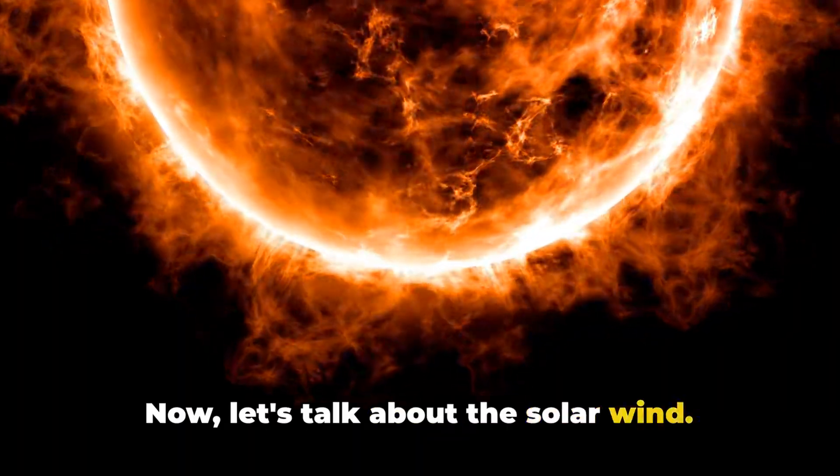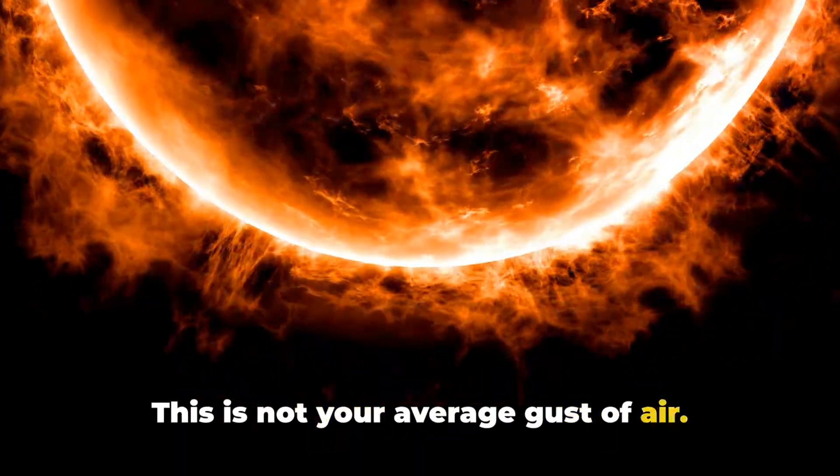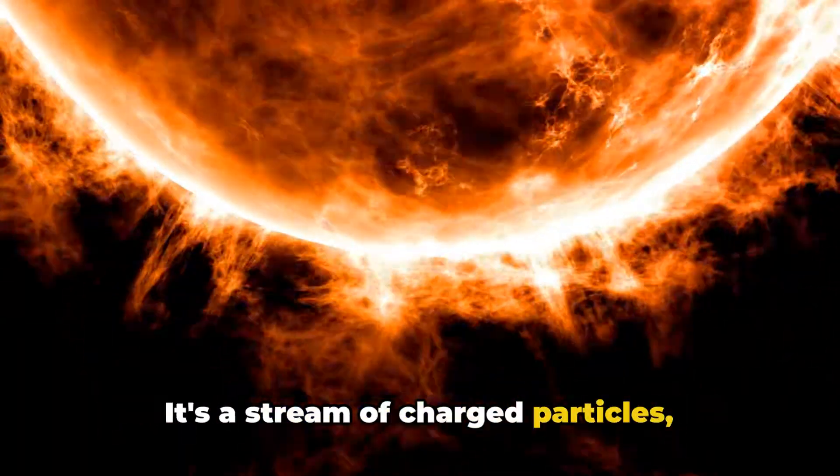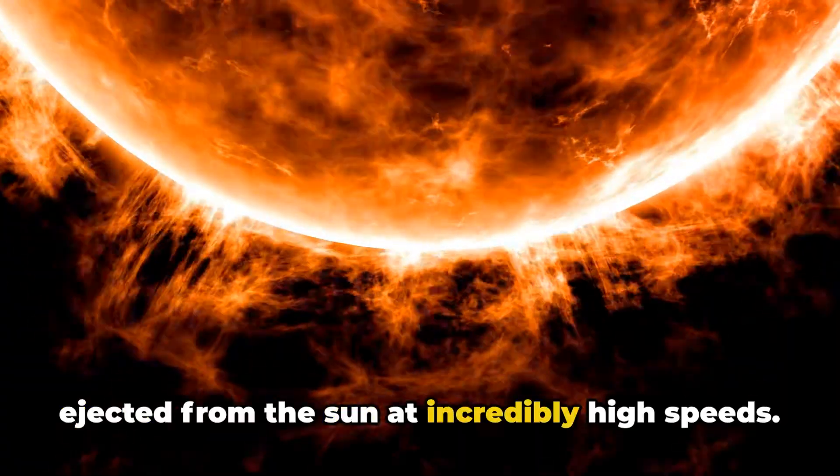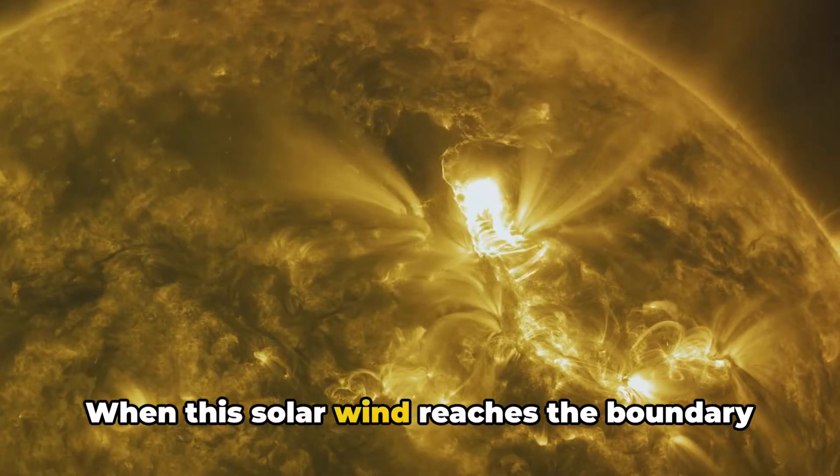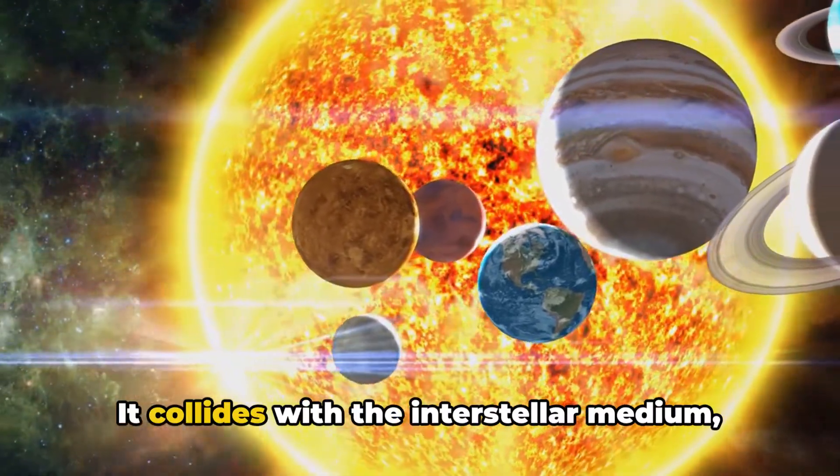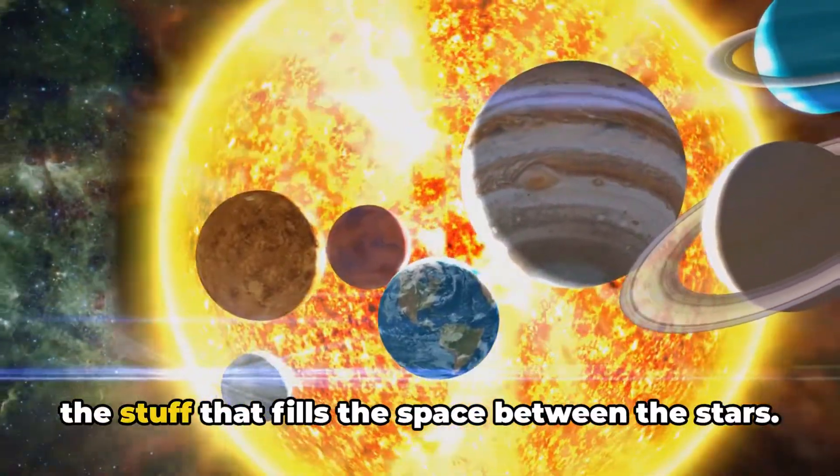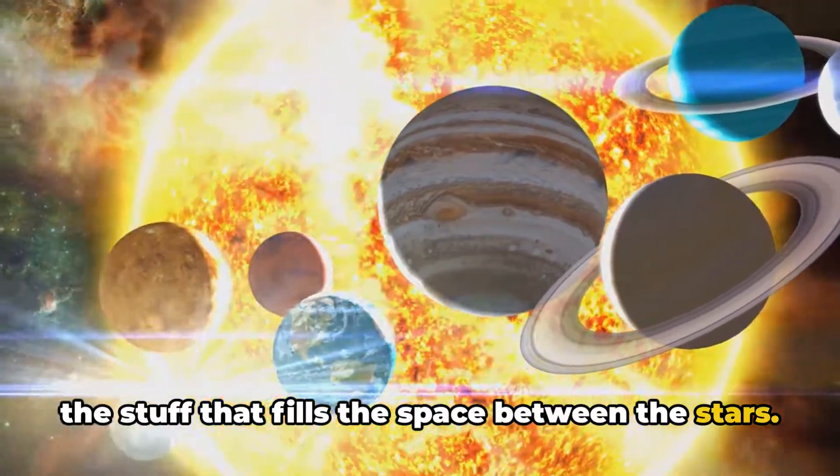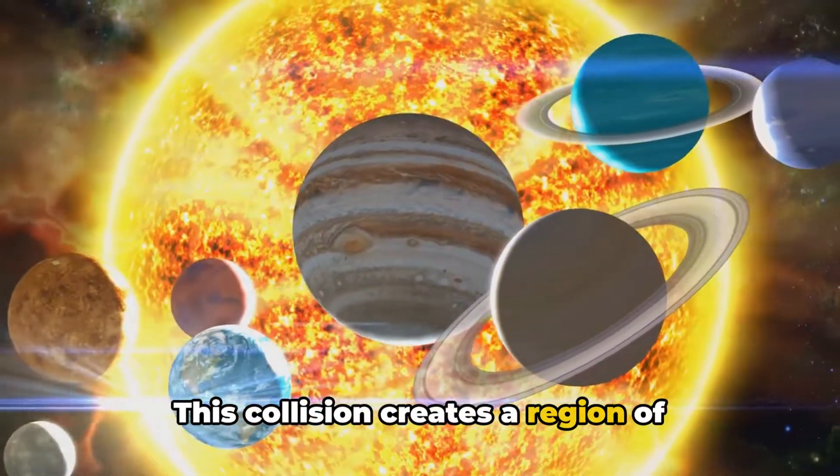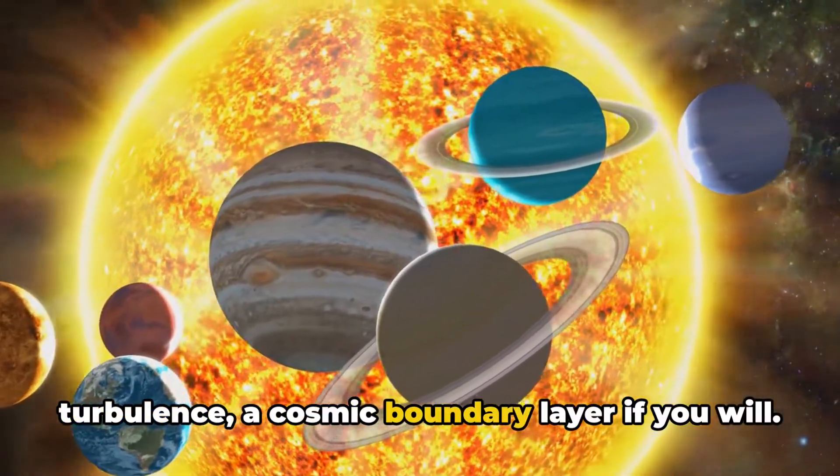Now, let's talk about the solar wind. This is not your average gust of air. It's a stream of charged particles ejected from the sun at incredibly high speeds. When this solar wind reaches the boundary of the heliosphere, it doesn't just stop. It collides with the interstellar medium, the stuff that fills the space between the stars. This collision creates a region of turbulence, a cosmic boundary layer if you will.